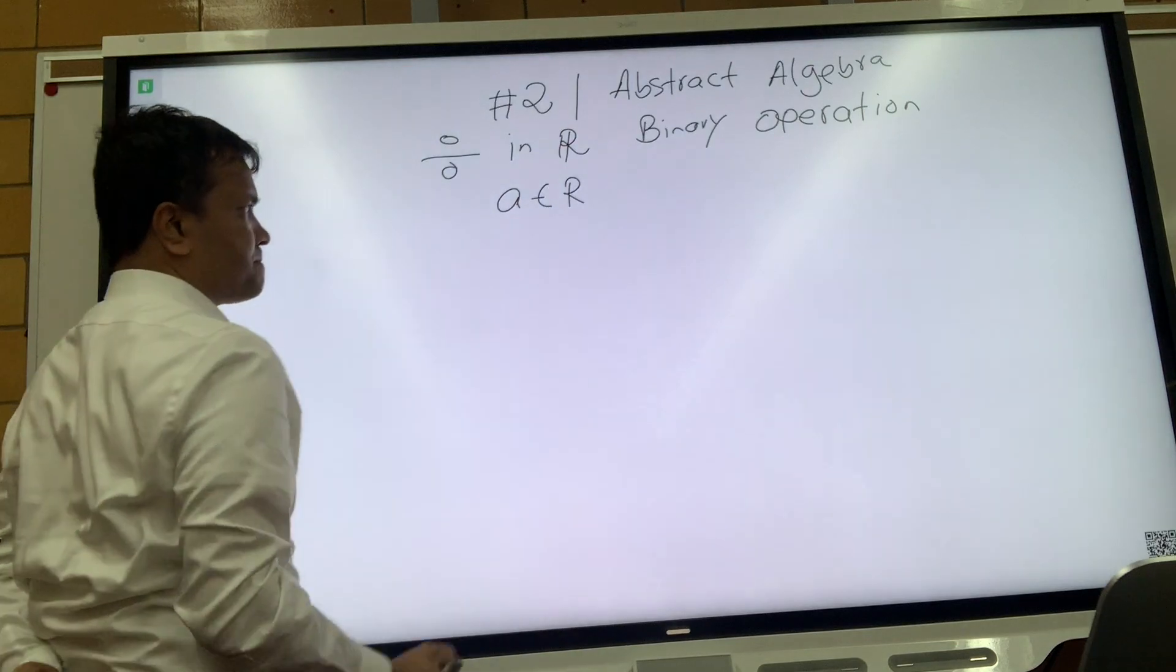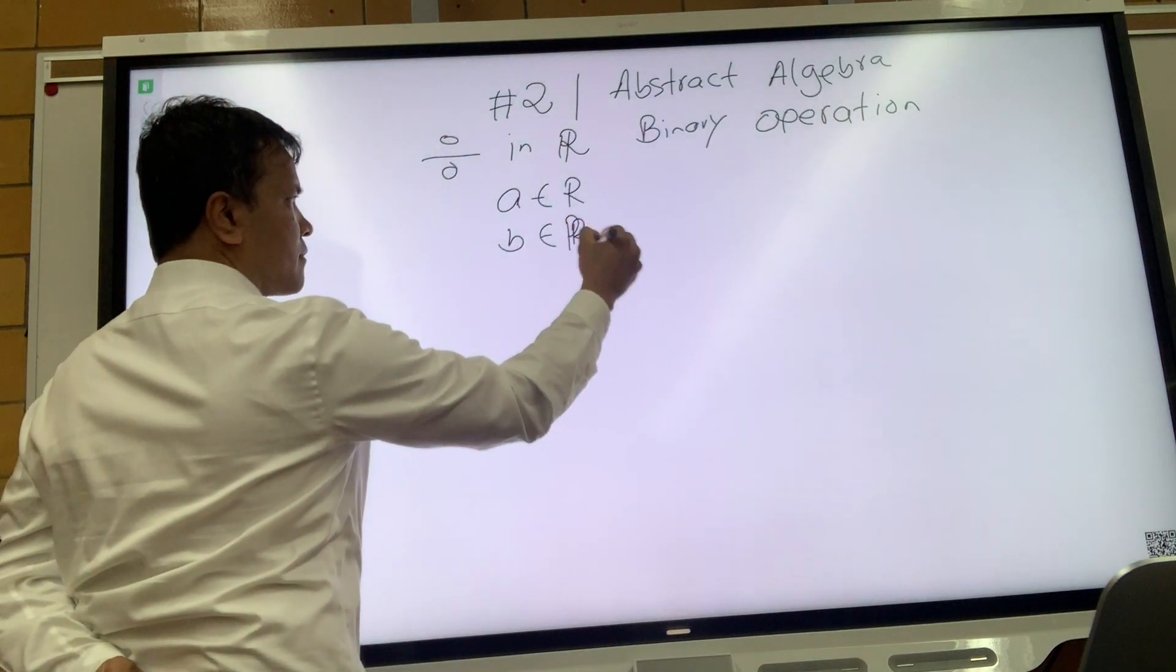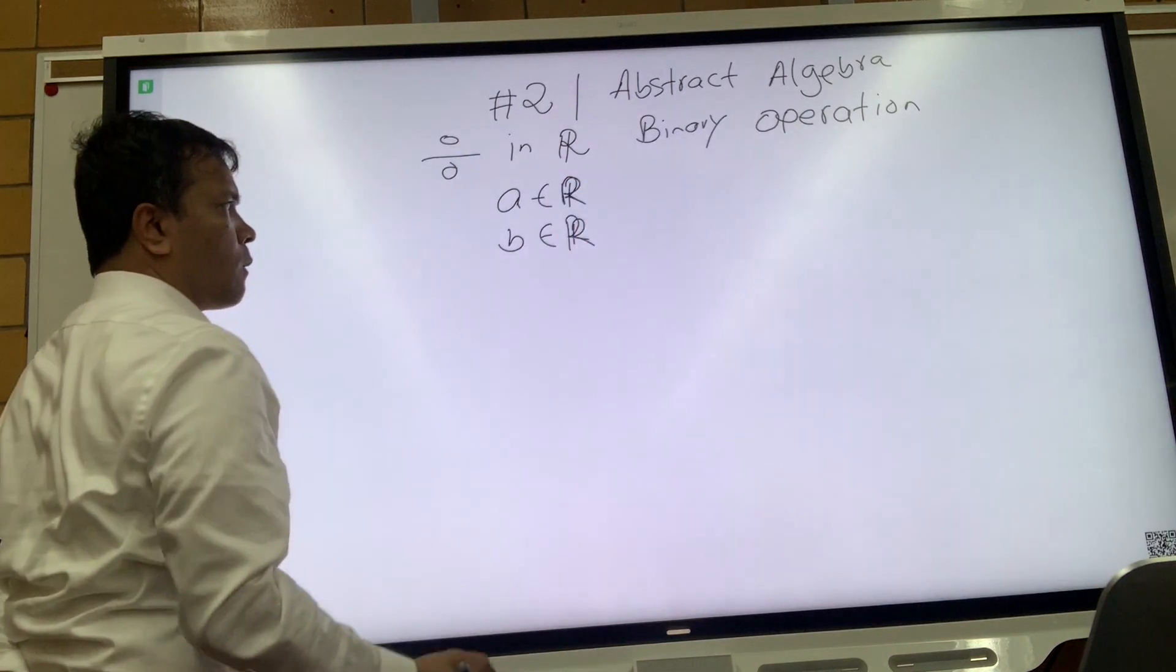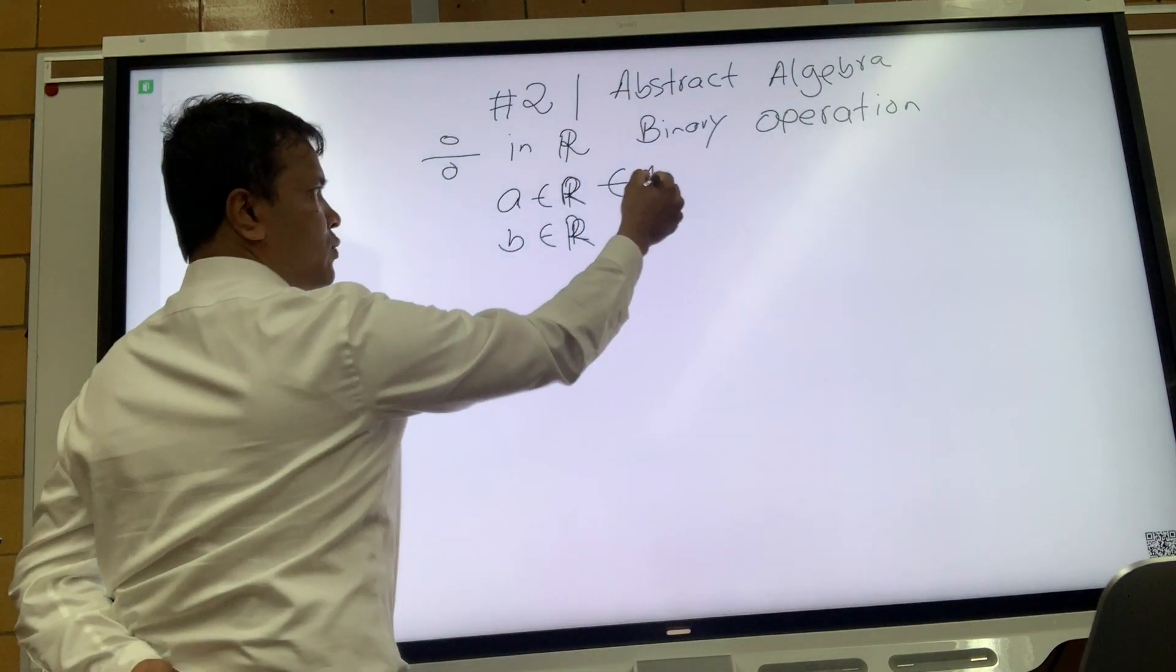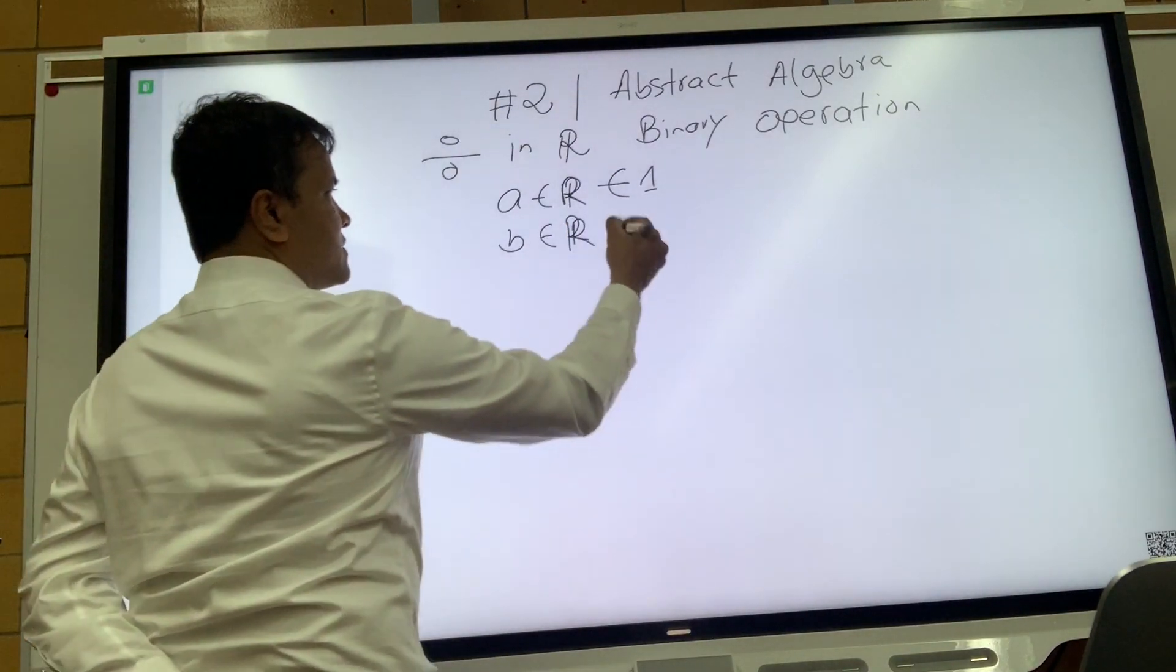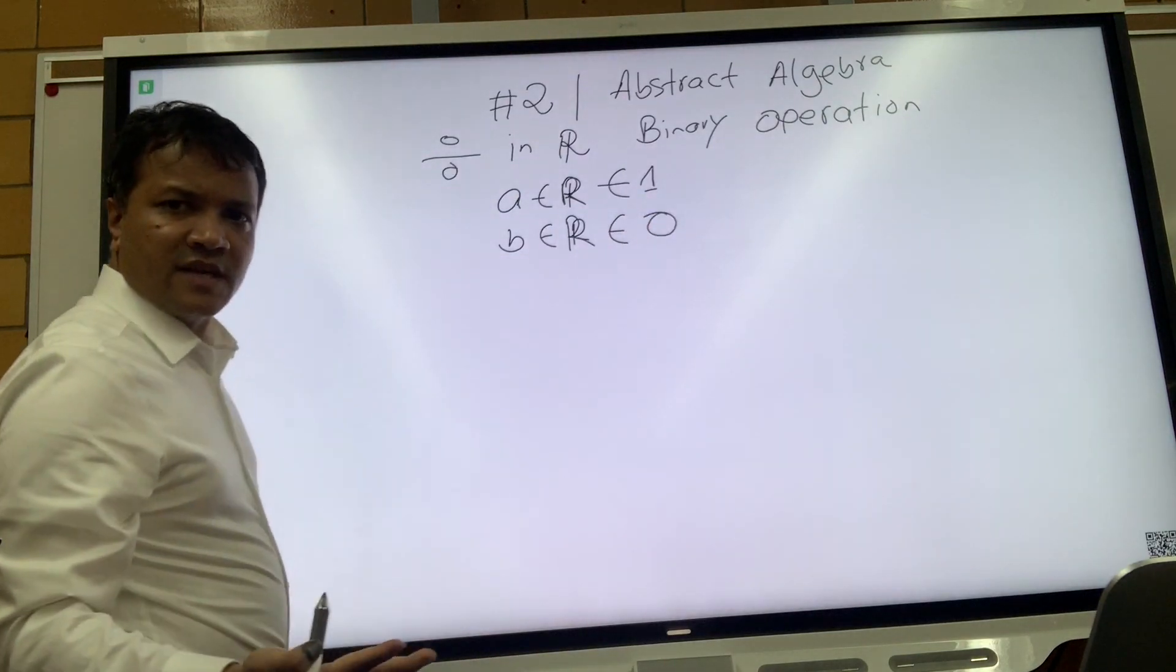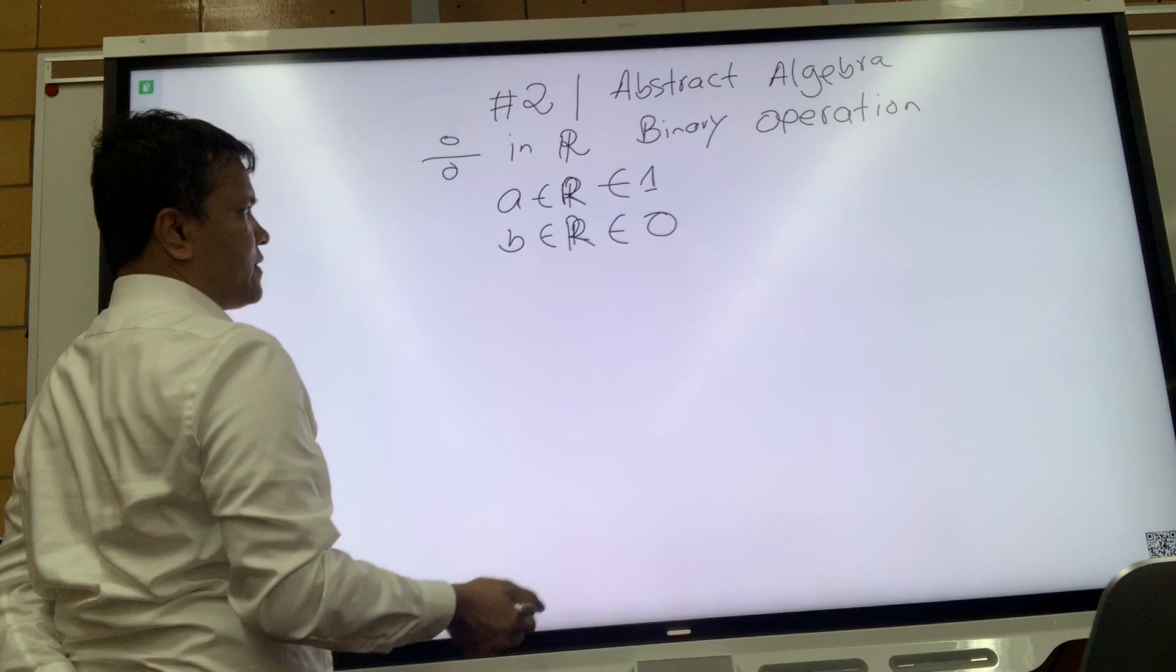So a is in R and let's say b is also in R because we can always pick a number that is in R. Let's say a equals 1. 1 is in R because 1 is a natural number, and natural numbers are a subset of real numbers. b is 0 because 0 is a real number. 0 is a whole number, and whole numbers are a subset of real numbers.